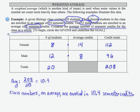We can formalize our solution and write as a complete sentence: class members, on the average, are enrolled in 10.4 semester credits. We can see that if we had added 14 plus 8 and divided by 2, we would have gotten 11. It makes sense that our class average is a bit lower, because we have more men than women and their average credits are lower.